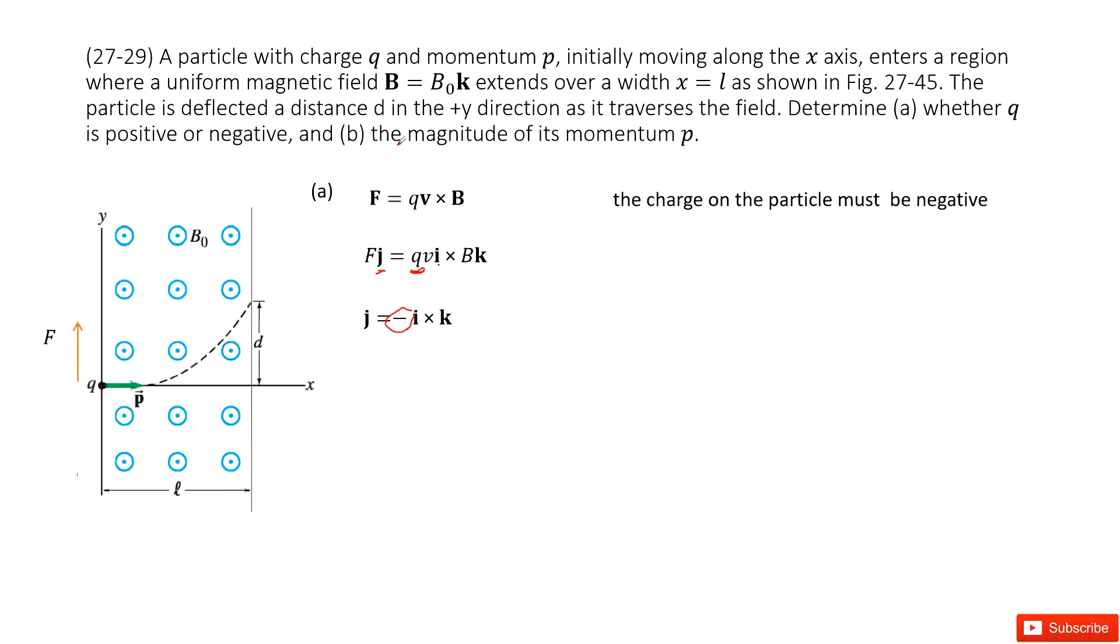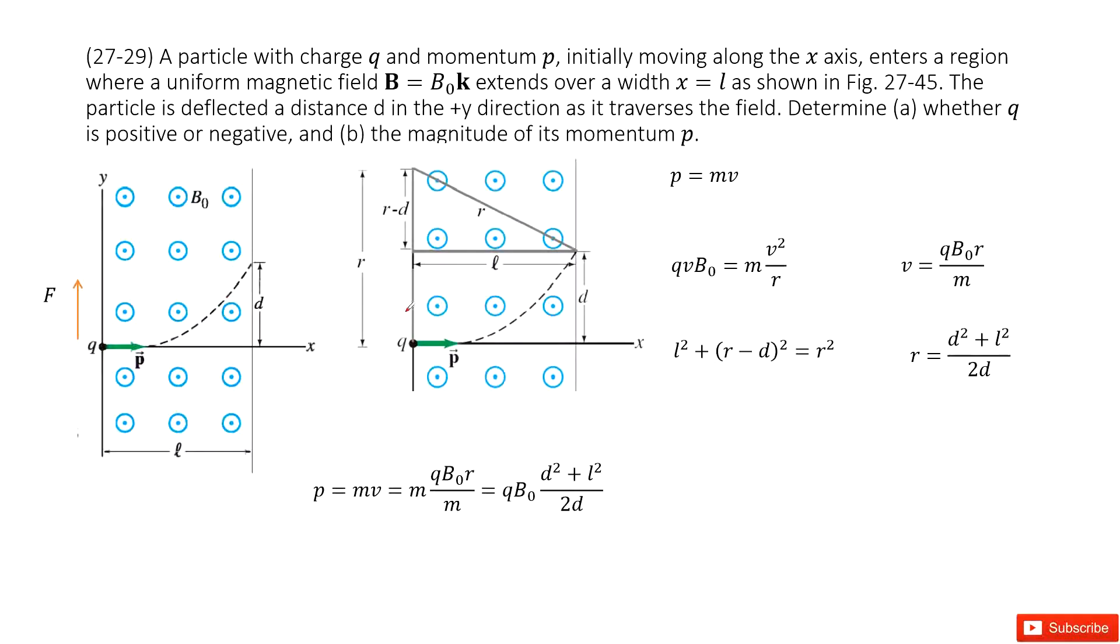The second one asks you the magnitude for this momentum p. So how can we do that? We can consider it there. As we can see, the charged particle does circular motion. And this force, Lorentz force, is q v B equals mass times centripetal acceleration. Centripetal acceleration is v squared divided by r.